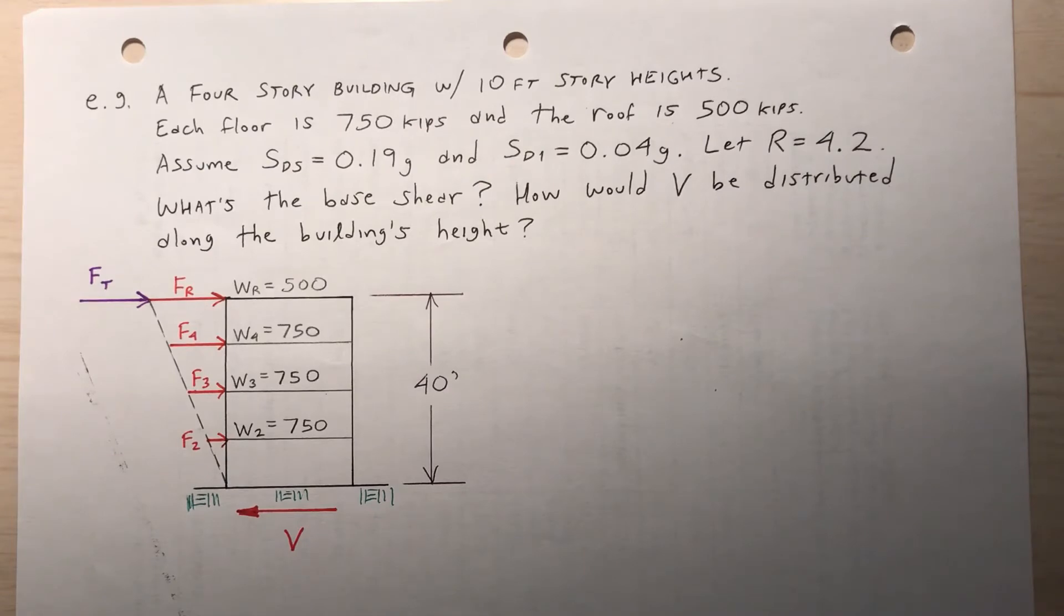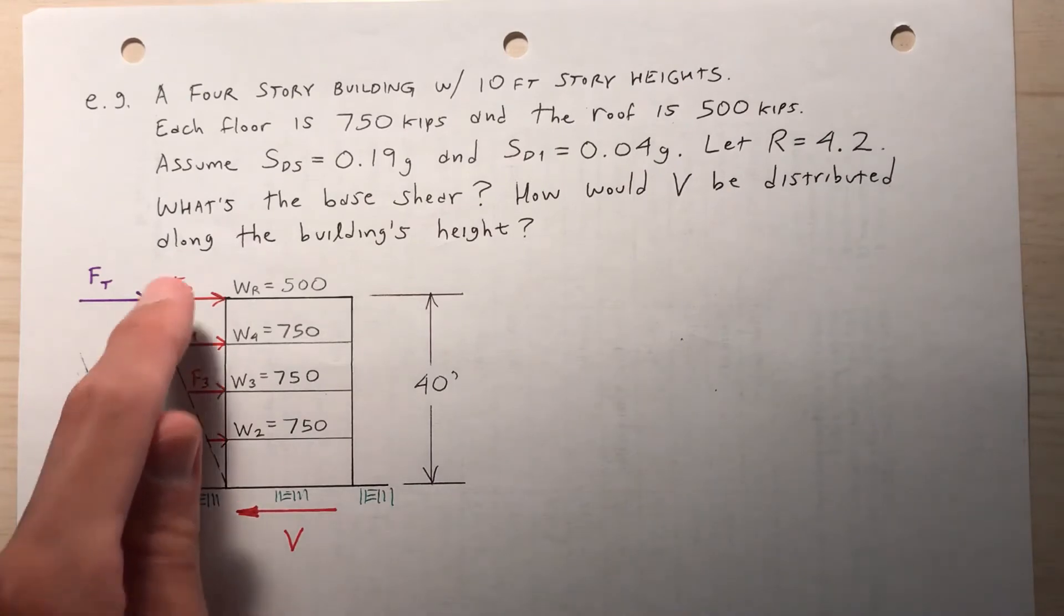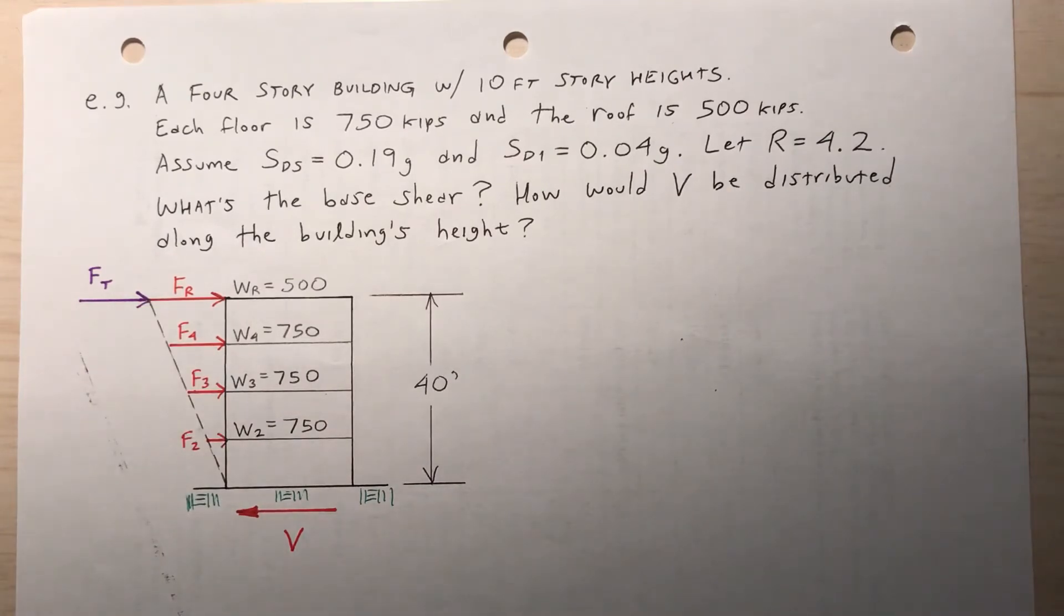So what I'm asking about here, what is the base shear V, and then how would V be distributed along the building's height? So I have somewhat of a triangular distribution here, F_2, F_3, F_4, F_R. That is how I would distribute the base shear to the floors and to the roof. And then some books include an F_T, so I'll see whether F_T is a factor here. Now this is a shorter building, this certainly wouldn't be considered a skyscraper. It's only 40 feet tall, so most likely a static analysis would be okay for this. I wouldn't necessarily have to do a dynamic analysis.